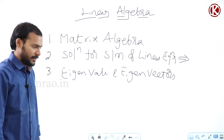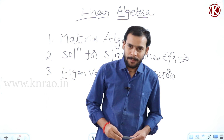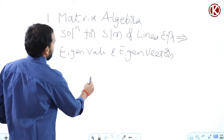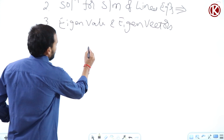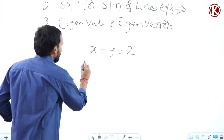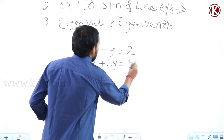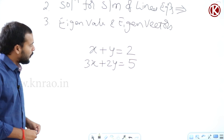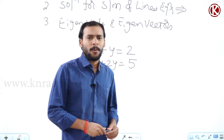We are going to start with solution for system of linear equations. To understand what is meant by a system of linear equations and its solution, consider two equations: x plus y equals 2, and 2x plus 3y equals 5. These two equations form a system of linear equations.